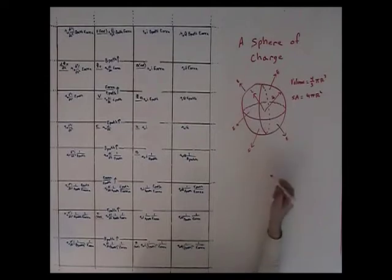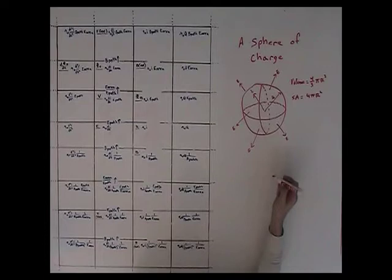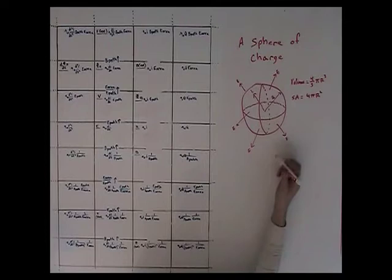E times surface area over volume. Now I want to repeat this pattern of lines further down: this will be 4 pi r, this will be r, this will be r over 3, and this one up here will be r over 3. That maintains the constant that any three lines across consecutively gives you the same volume.